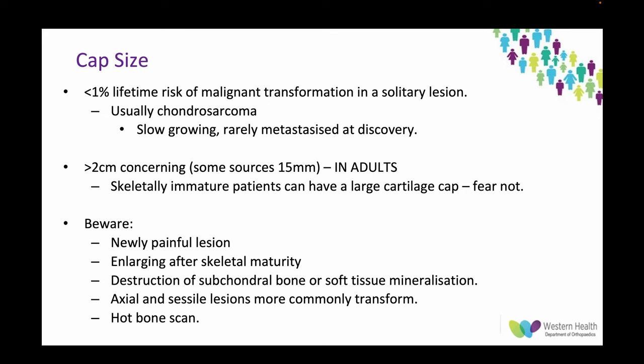Cap size is something commonly spoken about. In a solitary lesion there's less than a 1% lifetime risk of malignant transformation, and if it does transform it's usually a low-grade chondrosarcoma — slow growing and rarely metastasized at discovery. A cartilage cap of more than 2 cm, some sources say 15 mm, is concerning — but that's only applicable in adults. In skeletally immature patients they can have a large cartilage cap, so fear not. Beware the newly painful lesion, any lesion still enlarging after skeletal maturity, or destruction of subchondral bone or soft tissue mineralisation, which would indicate a chondrosarcoma.